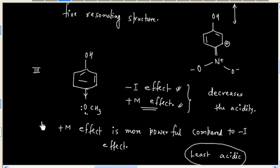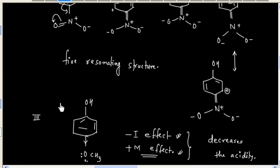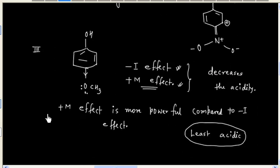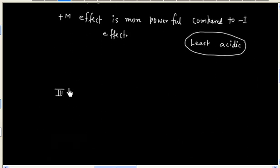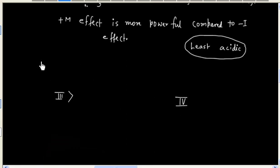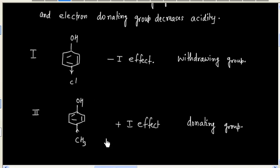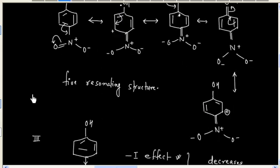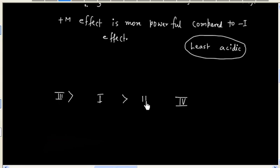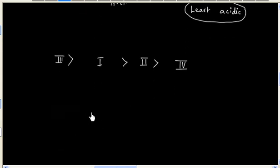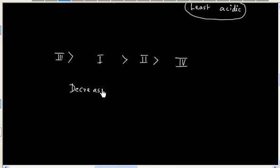Now we can write the order. So third is most acidic and fourth is least acidic. Among 1 and 2, 1 is more acidic compared to 2. So this is the order of acidity. So decreasing order of acidity, this is 3, 1, 2, finally 4.